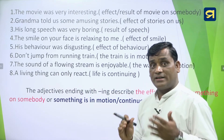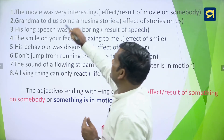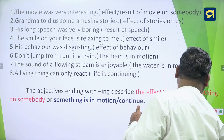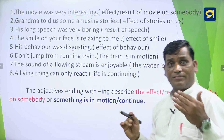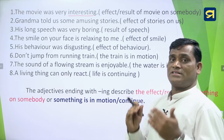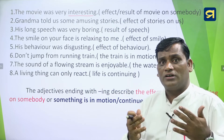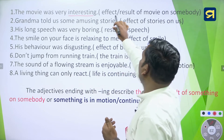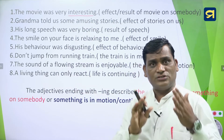Now look at examples for ING form adjectives. 'The movie was very interesting' — interesting is the adjective in ING form. We feel interesting because it is the result of the movie — due to the movie we feel that way. So it is the effect or result of the movie on somebody, and that is why the ING form of adjective is used.